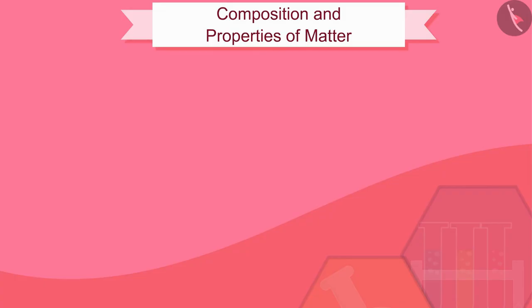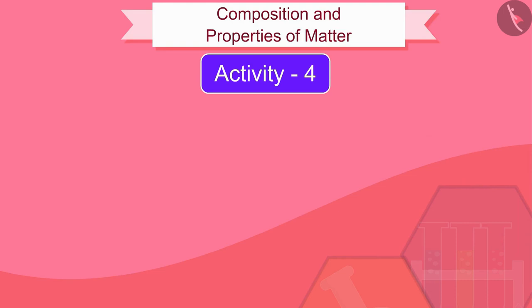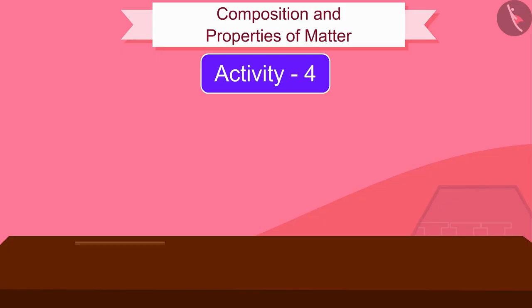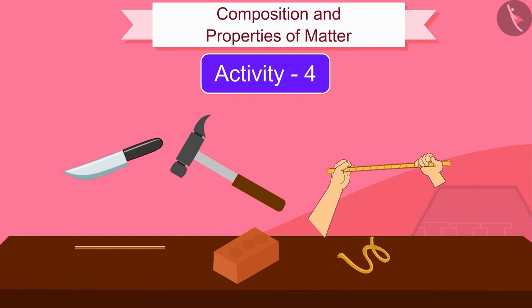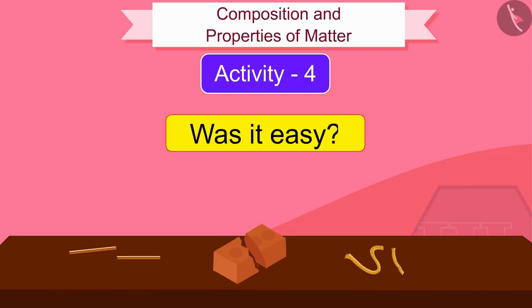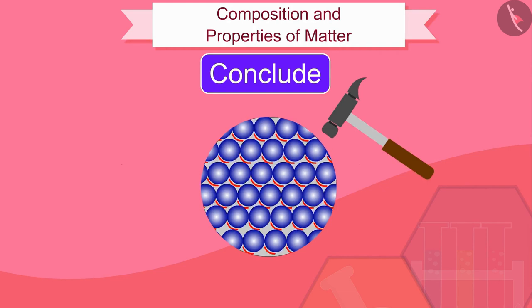Let us now discuss the last characteristic feature of particles. We will also try to understand it through an activity. Take a copper wire, a piece of brick and a rope. Try to make them brittle by hammering, cutting or pulling them. Was it easy?